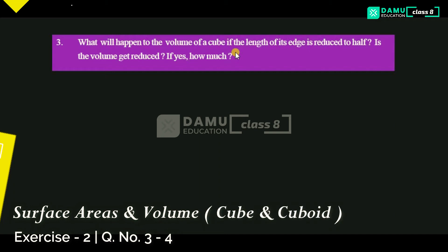What is that? What will happen to the volume of a cube if the length of its edge is reduced to half? Does the volume get reduced? If so, by how much does the volume get reduced?